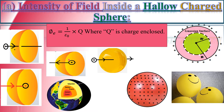If we place a positive charge at the center of the sphere, field lines emerge from it — so there is a flux contribution. Similarly a negative charge also contributes flux. This is why in Gauss's Law we only consider the charge enclosed inside the surface. In the next slide we will find the electric field intensity mathematically using Gauss's Law.